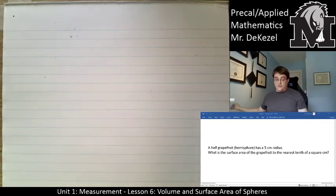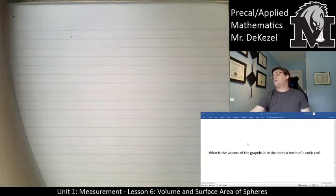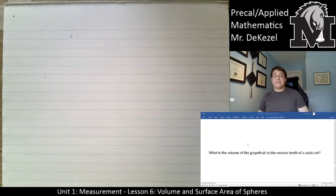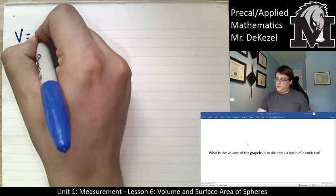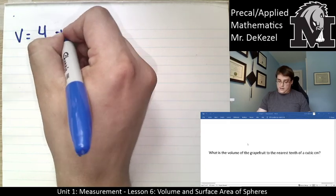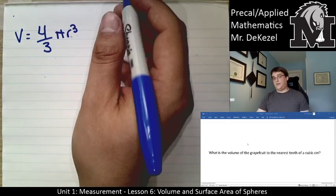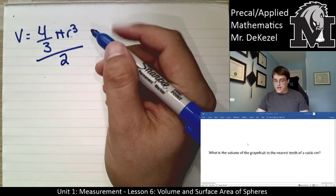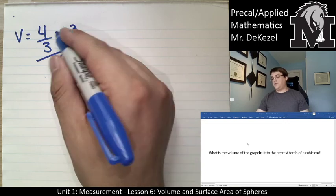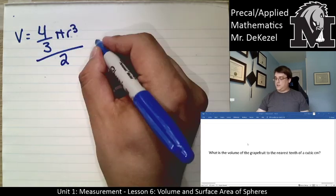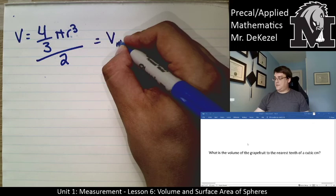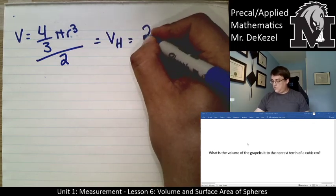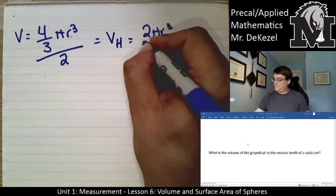The next thing it wants to know, if we go down just a little bit here, what is the volume of the grapefruit to the nearest tenth of a cubic centimeter? So now we are going to find out the volume. Volume equals 4 over 3 πr³, and then the volume of half of a sphere is just going to be divide the whole thing by 2. When you're dividing this whole thing by 2, you're getting rid of the 4. So the actual volume of that hemisphere is 2πr³ divided by 3.